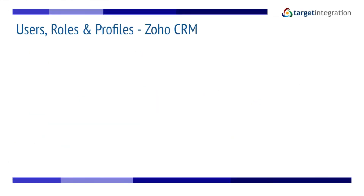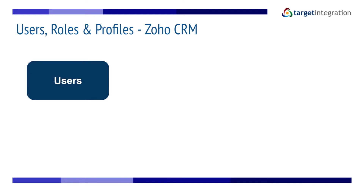In this video we'll be looking at users, roles, and profiles within Zoho CRM. As you proceed with setting up your CRM account, your next step involves adding users and determining their roles and permissions. A user is the one who manages records within the organization, whether owned or shared. You can add users based on the edition purchased and the number of user licenses allowed. Each user can sign in with an email address and a password.